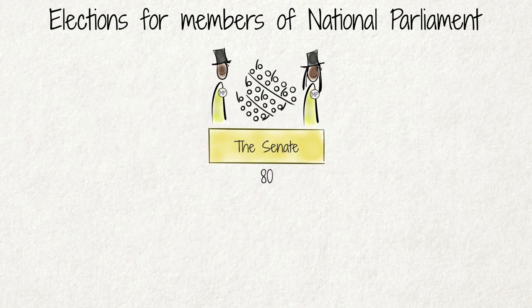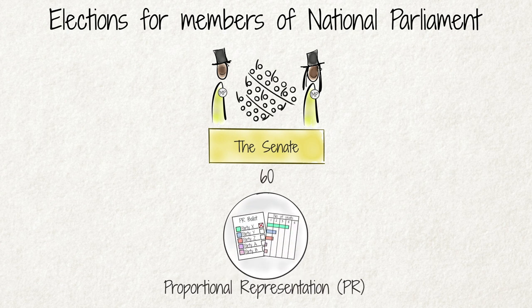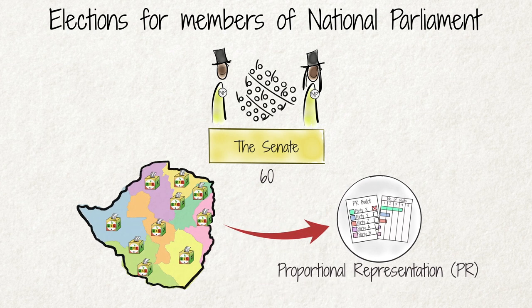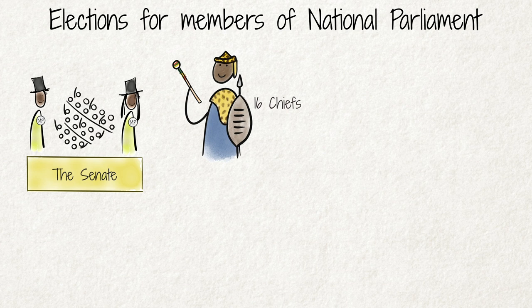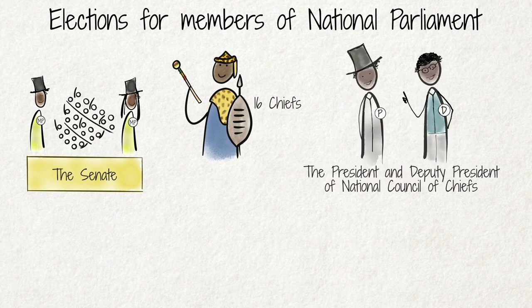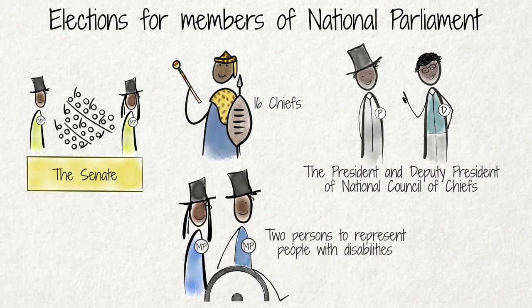The majority of members of the Senate — 60 — are elected under the PR system. The calculation of seats is also based on the votes cast for members of the National Assembly in each province. The remaining members of the Senate are 16 chiefs nominated by the provincial assemblies of chiefs in the eight non-metropolitan provinces, the president and deputy president of the National Council of Chiefs, and two persons — a male and female — elected to represent people with disabilities.